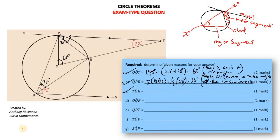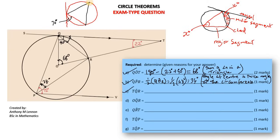For a second example: we have a tangent and a chord, with an angle between them of 70 degrees. Then any angle formed by the same chord, not in this segment but in the major segment at the circumference — and it must be at the circumference, standing on the endpoints of the chord — that angle is also 70 degrees. This is the alternate segment theorem: the angle between a tangent and a chord is equal to the angle in the alternate segment.